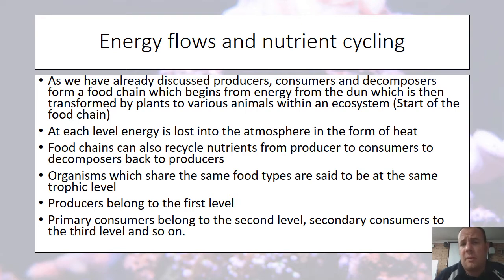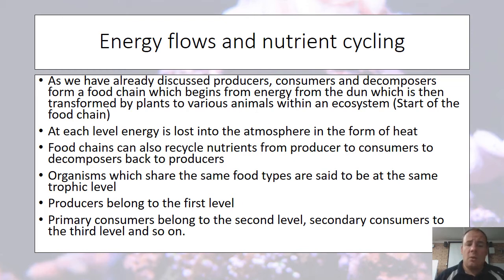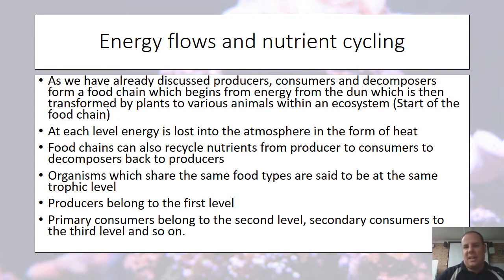As soon as we go up in trophic levels, we lose energy as well. Producers belong to the first level, primary consumers belong to the second level, secondary consumers to the third level, and so on. Simple food chains are very, very rare — most food chains are complex. If we lived on one particular source of food that goes extinct, then we're going to become extinct. That's why plants and animals have adapted to get different types of food.